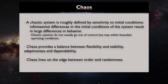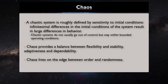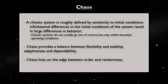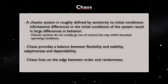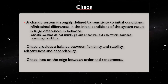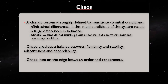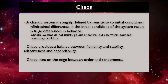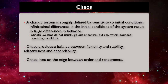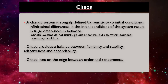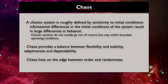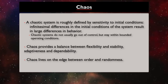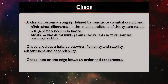A chaotic system can be roughly defined by its sensitivity to initial conditions. Very small differences in the initial conditions of the system result in large differences in behavior. A chaotic system provides a balance between flexibility and stability, adaptiveness and dependability. Chaotic systems do not usually go out of control, but stay within bounded operating conditions. It lives on the edge between order and randomness.